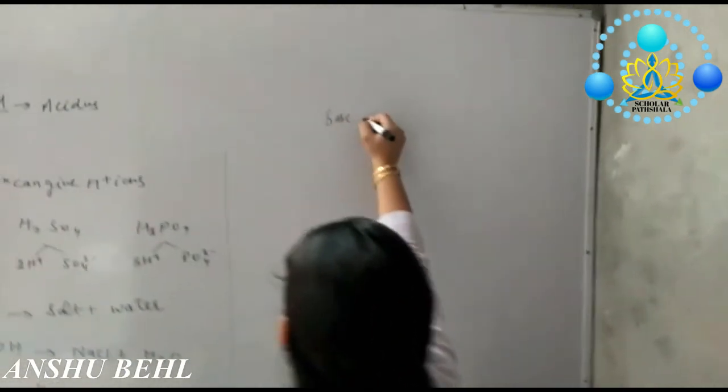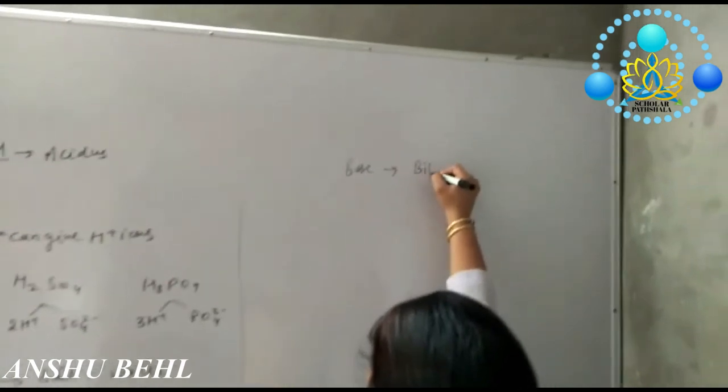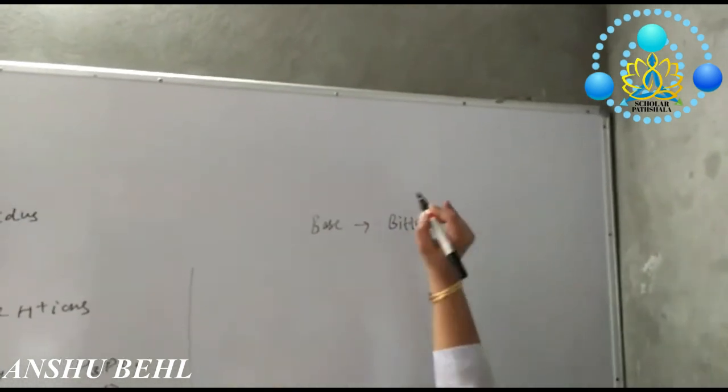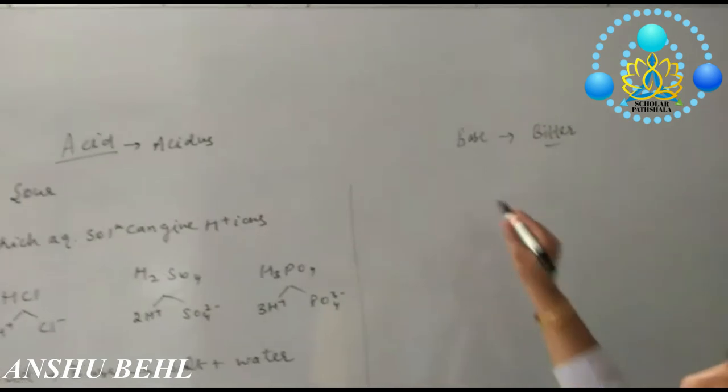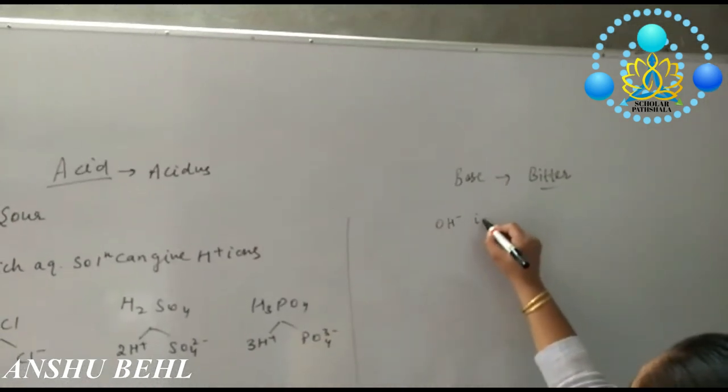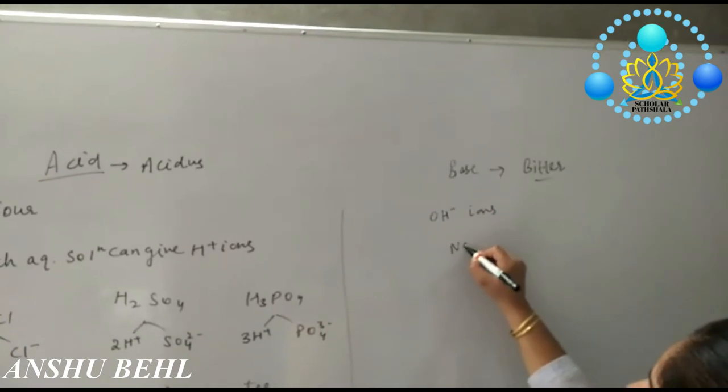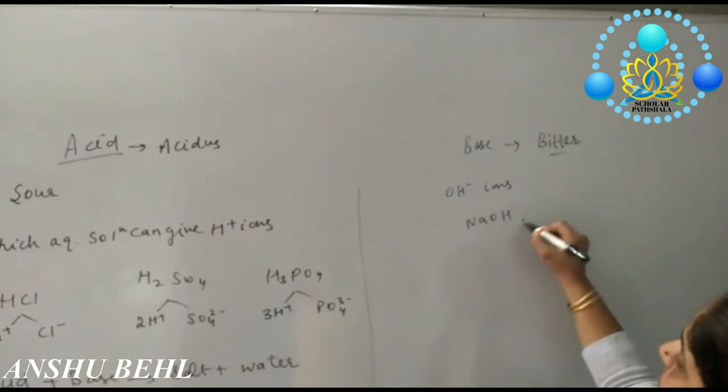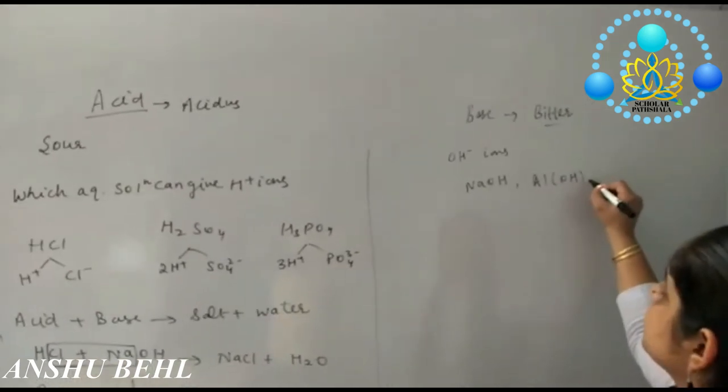Then you have bases. Base is a substance which is bitter in taste, and in aqueous solution it can give OH negative ions like NaOH, aluminium hydroxide, etc. These are the bases.